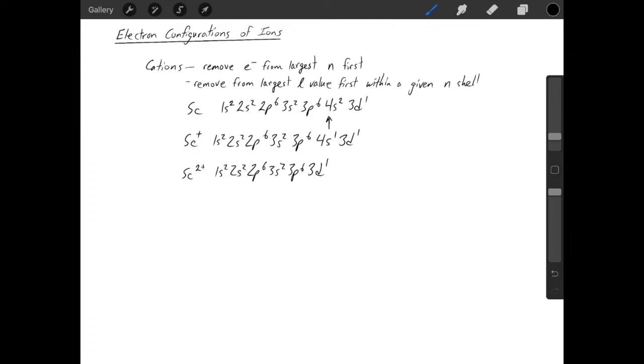If you want to remove another electron and make a scandium 3-plus ion, now the largest n-value is 3. There's a 3s, 3p, and 3d sub-shells. So when there are multiple options within an n-shell, you look at the largest l-value first. In this case, that's an l equals 2, the d-sub-shell. If you wanted to keep on making cations with increasingly large charges, you'd keep on removing electrons in the same way.